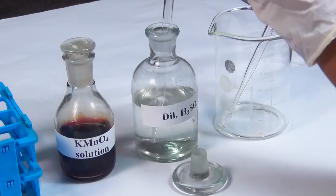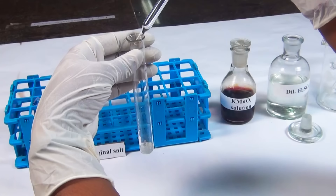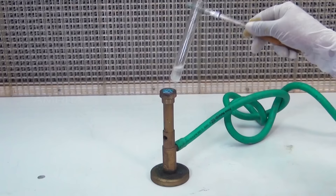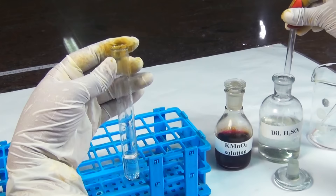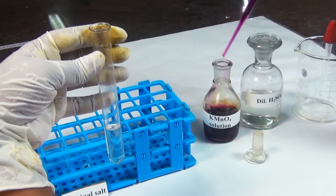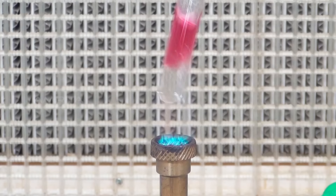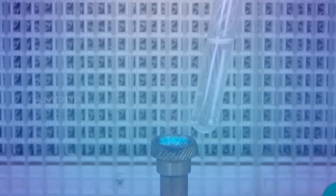Procedure: Take a small amount of the salt in the test tube. To this, add a small volume of dilute sulphuric acid using a dropper. Boil the contents over the Bunsen burner to boil off any gas evolved. Then add a little more dilute sulphuric acid, followed by a few drops of potassium permanganate. The potassium permanganate is decolourised due to the formation of colourless manganese sulphate, and carbon dioxide gas is liberated.